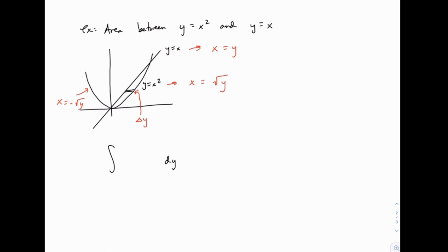So in this case, the upper function, quote-unquote, would be the square root of y, and the lower function, quote-unquote, would be y, because it's closer to zero. Once we recognize that, that's what goes inside our integral, and then we just need limits of integration.